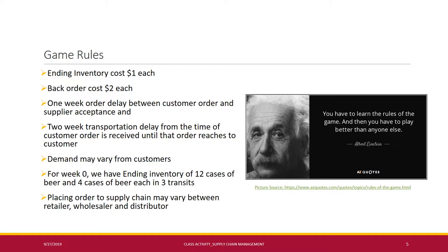Whenever there is an order, remember there is a one-week order delay between the customer order and supplier acceptance. There is also a two-week transportation delay from the time a customer order is received until that order reaches the customer. Every time the customer will make demand, the quantity demanded from each customer will be varying — sometimes a customer may order a large quantity of beer, sometimes less.